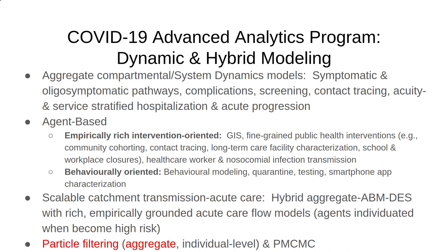Really, we need more fine-grained instruments when we're reasoning about design of many interventions. And for this reason, agent-based models are our second large set of tools. We have two rich agent-based models, including a richly empirically grounded GIS model that includes really fine-grained characterization of key public health interventions and a growing number of additional components.